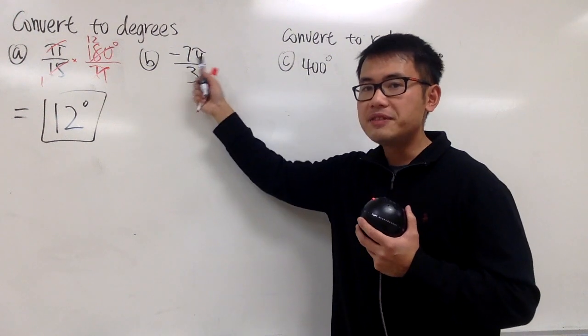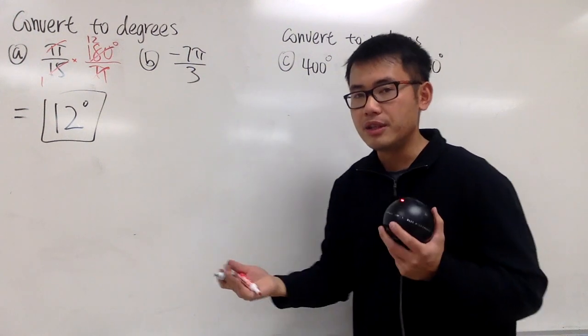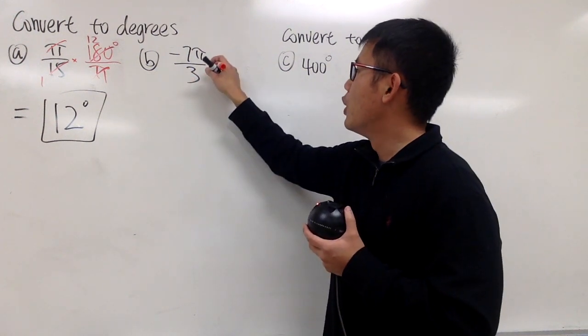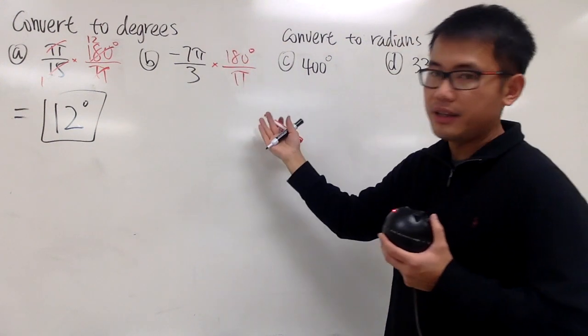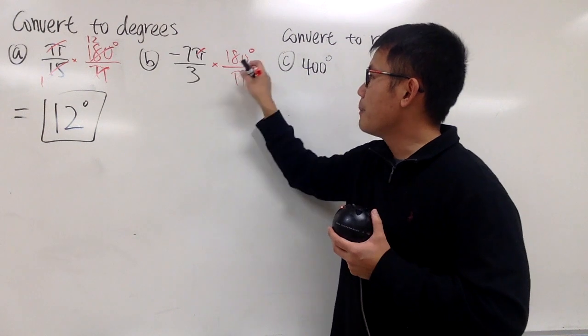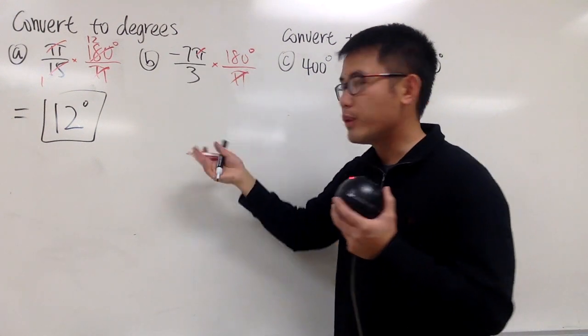For this one, negative 7π over 3, it's the same deal. We multiply by 180 degrees over π radians. First of all, π cancel each other out, and then we can reduce.